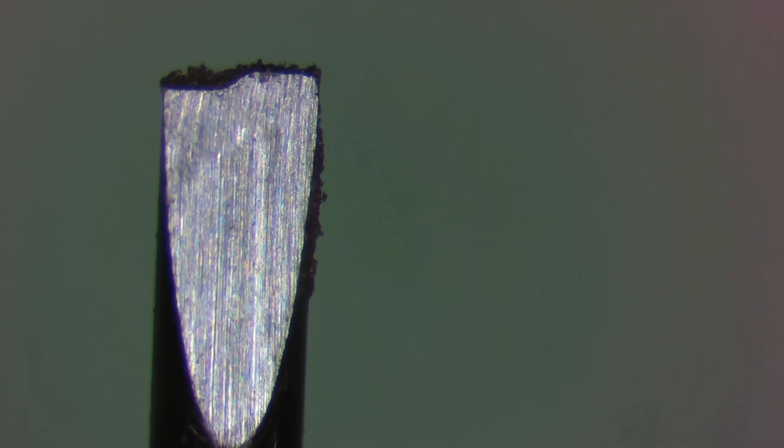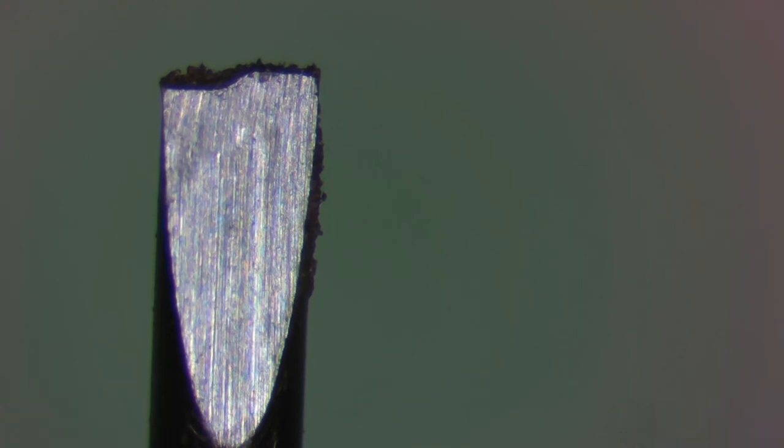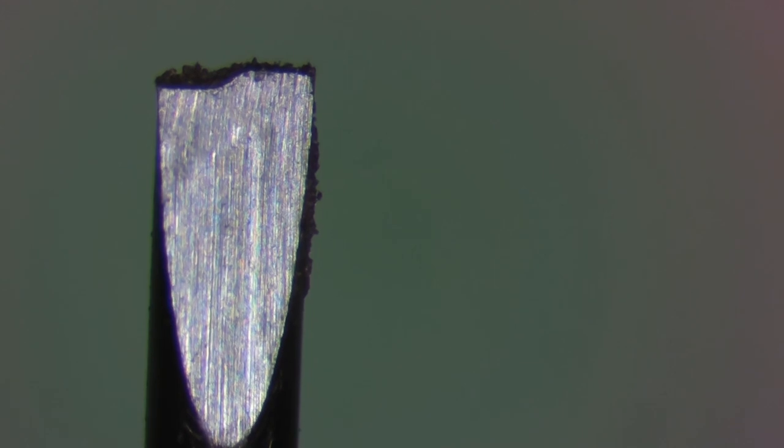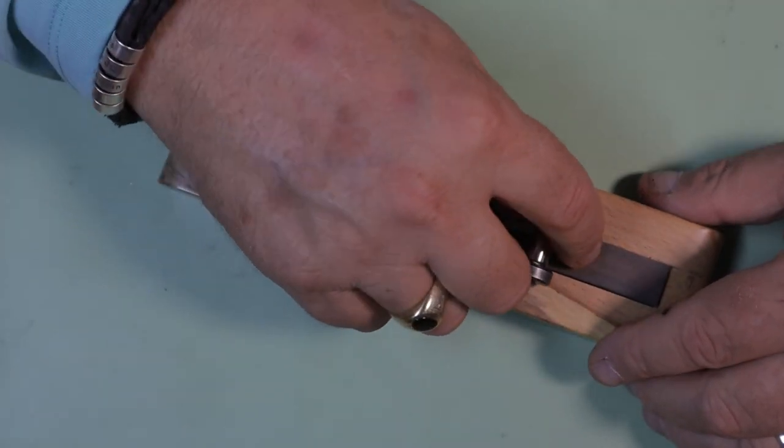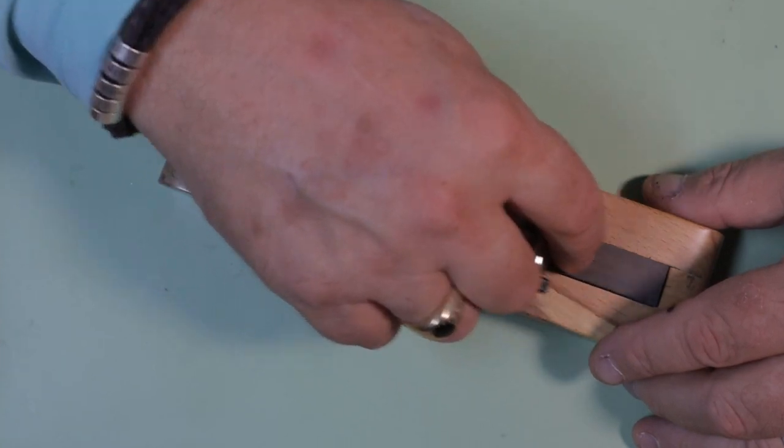Now you can see the screwdriver blade after 10 swipes across the sharpening stone on each side. You'll notice that all the sharpie has come off and what we're seeing is a shiny surface and we know we're not changing the profile of the blade.